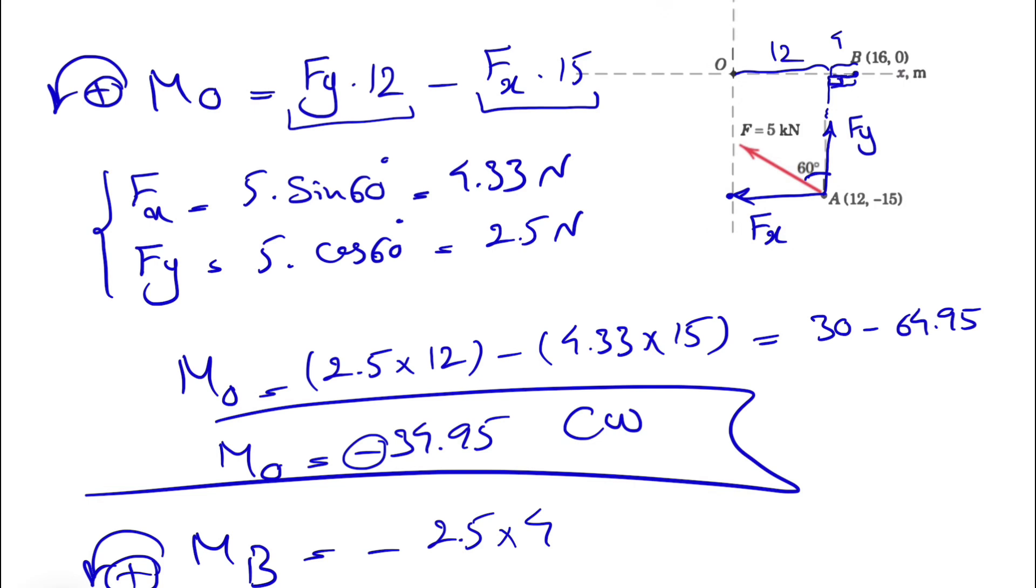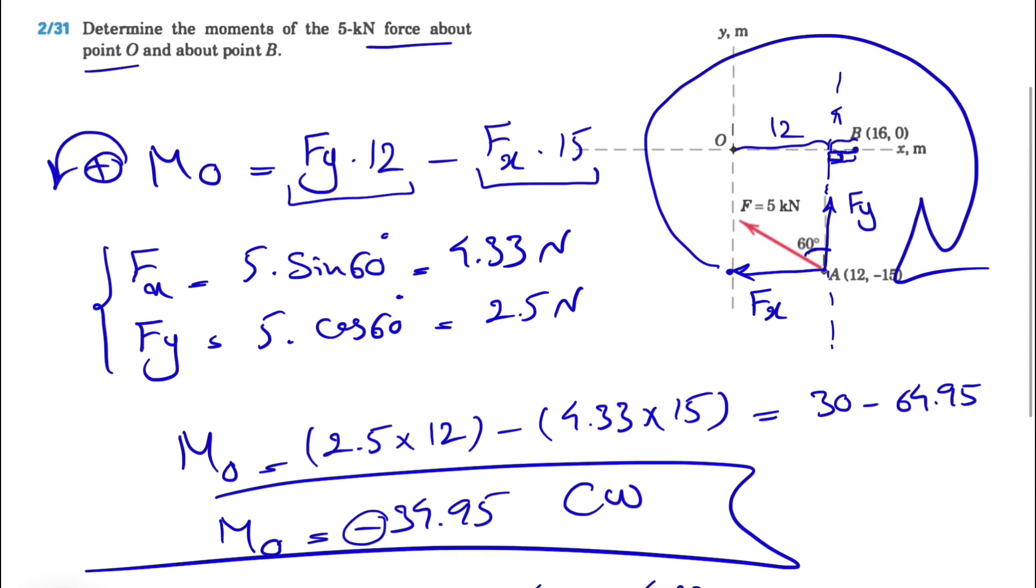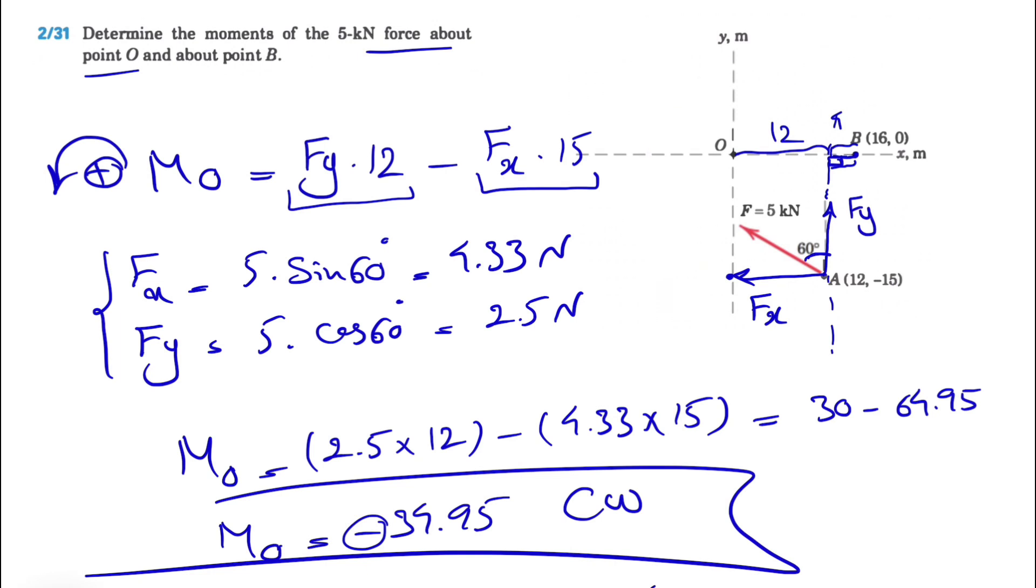Again, we are looking for the vertical distance, so we have this right angle to the line of action of the force, which is at this point. For FX, we can see also FX can make a clockwise moment, so we'll have a negative sign for FX too. We found FX was 4.33.